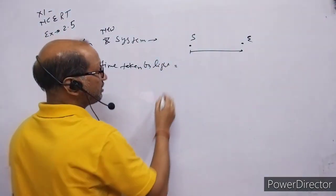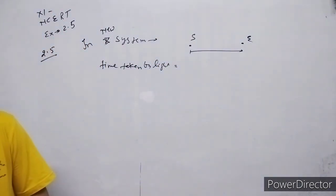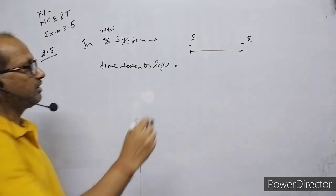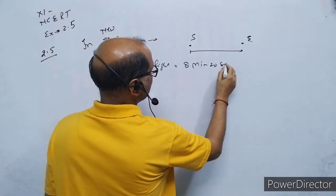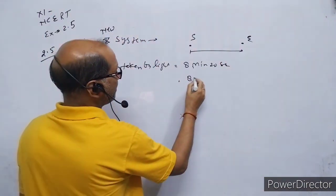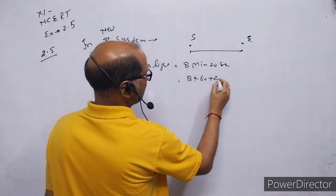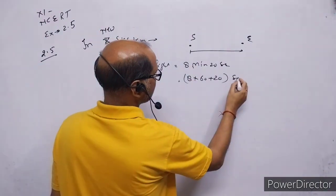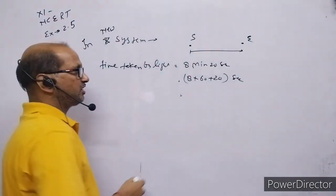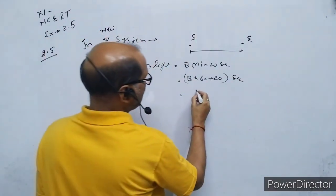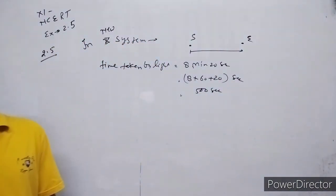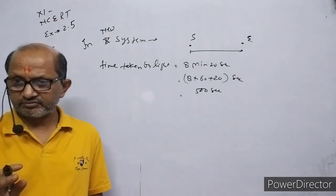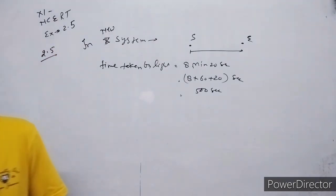So how much time is taken? 8 minutes and 20 seconds. Converting: 8 into 60 plus 20 gives us 500 seconds. That means the time taken by light to travel this distance is 500 seconds, going from Sun to Earth.